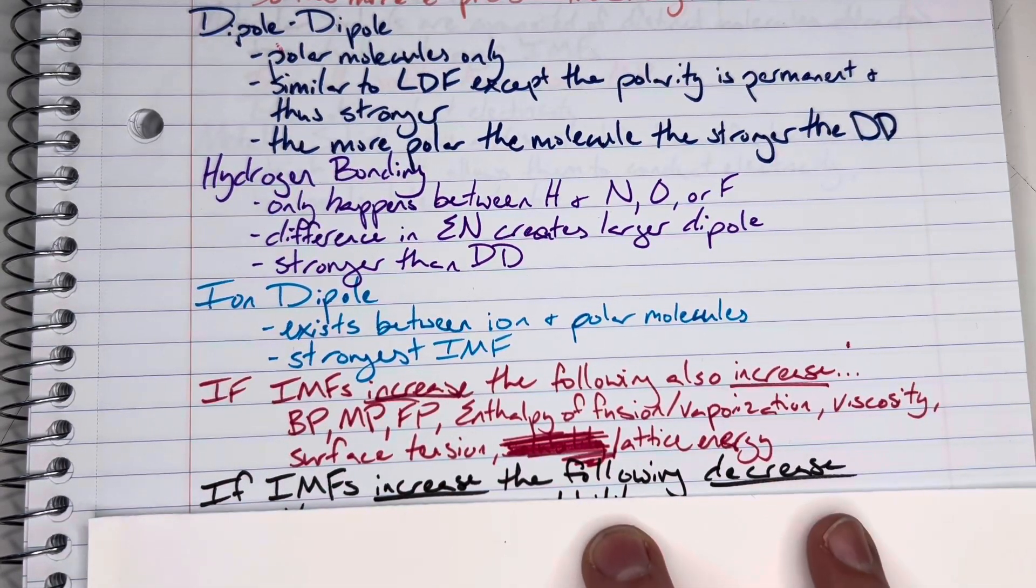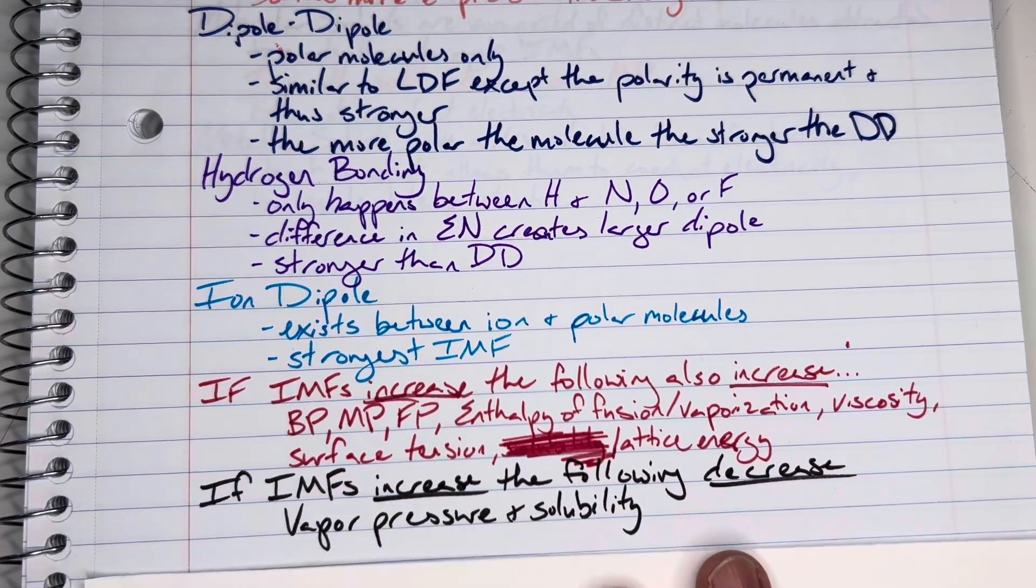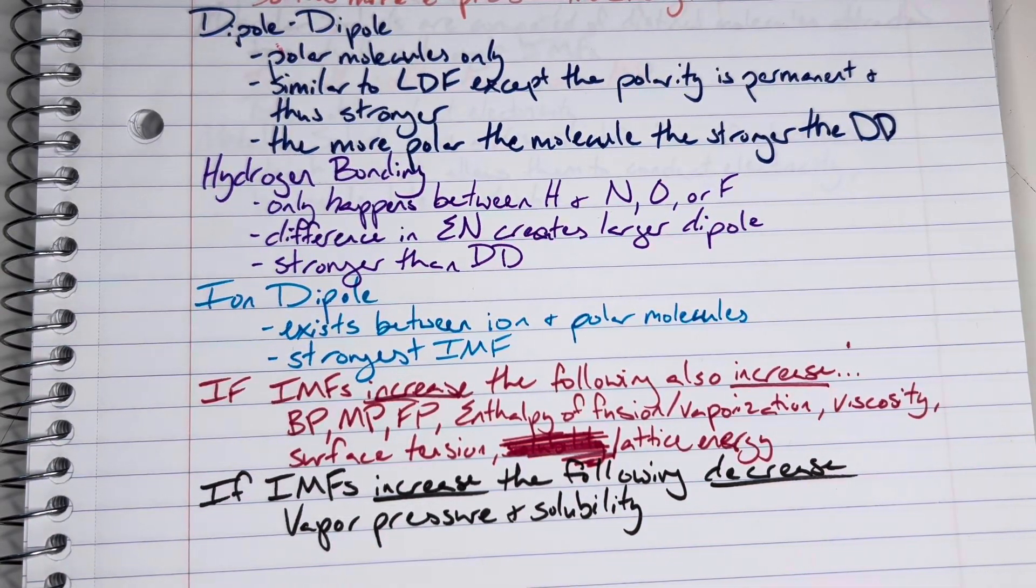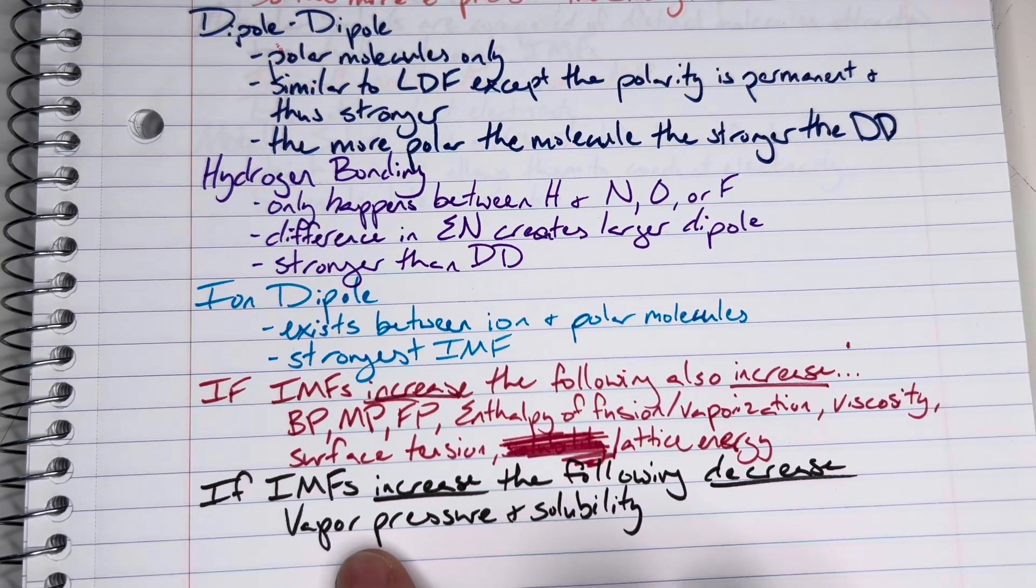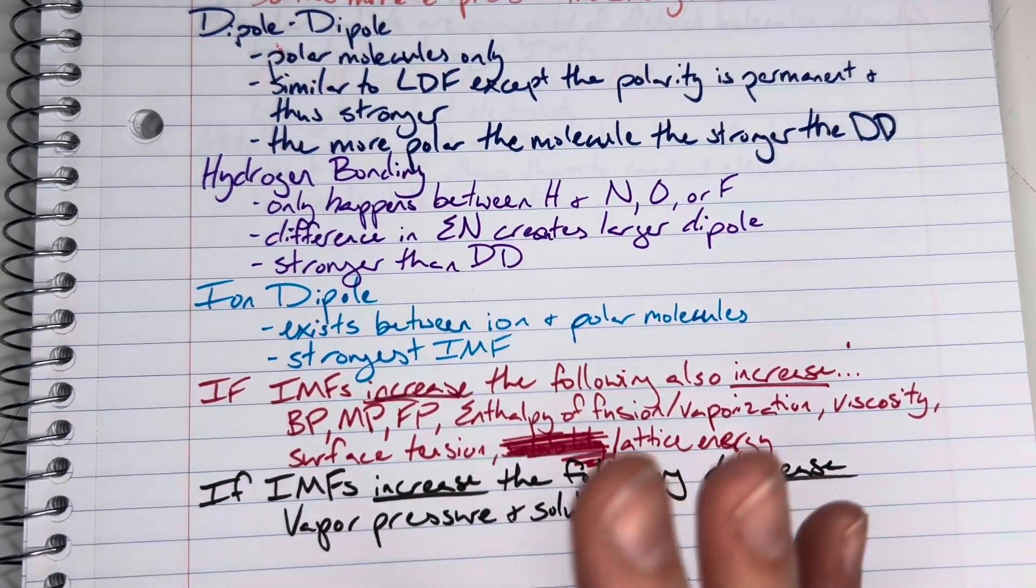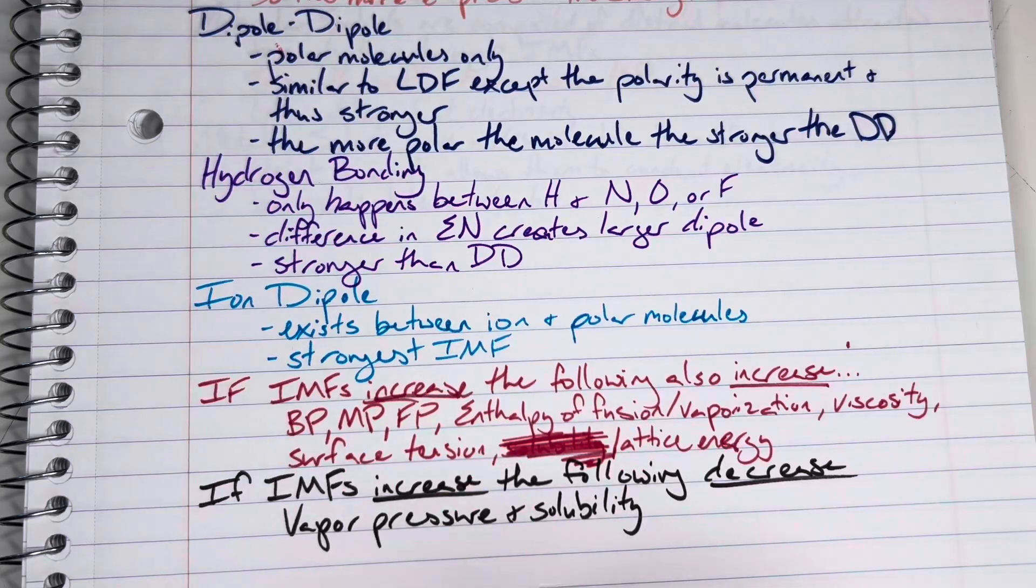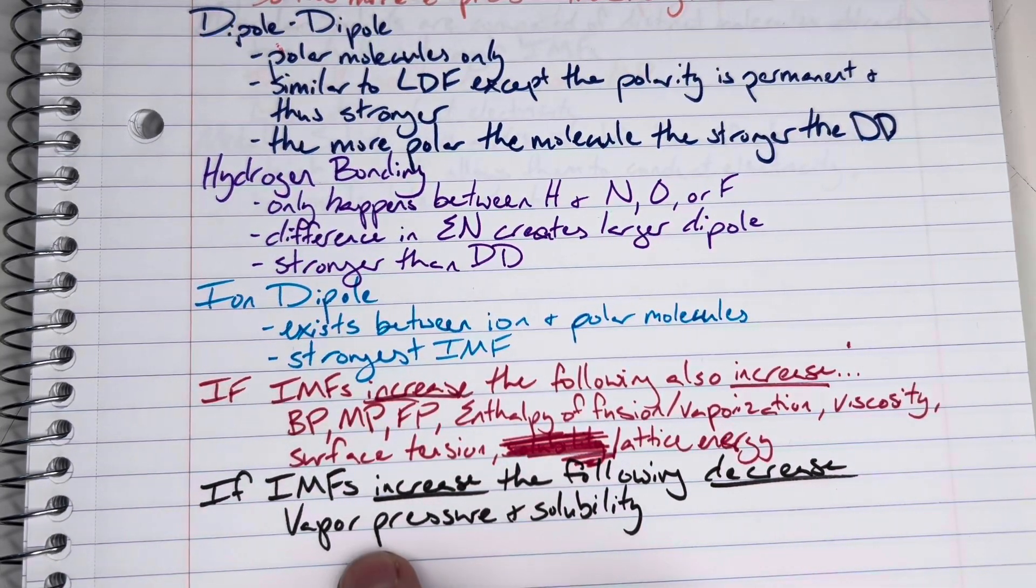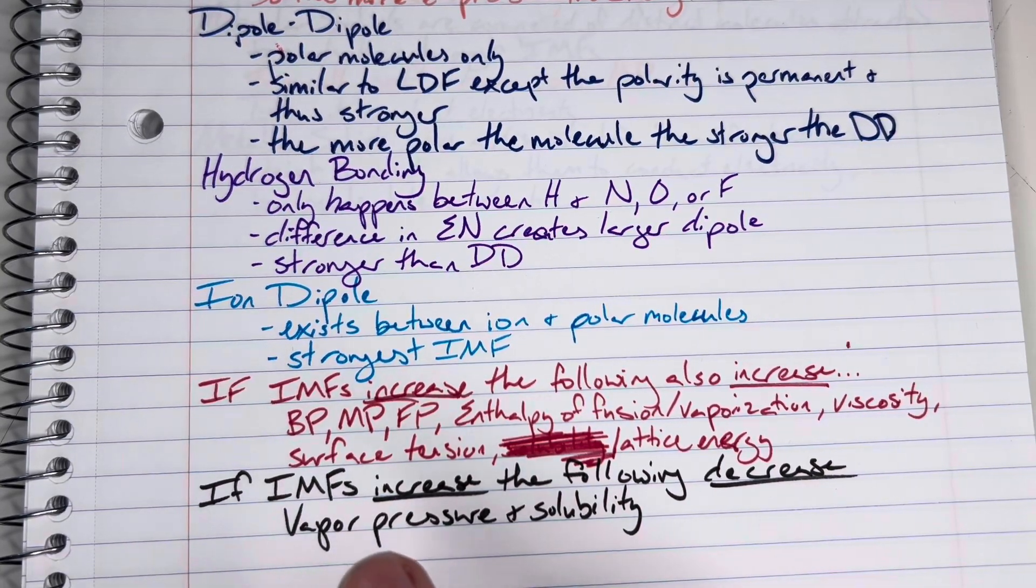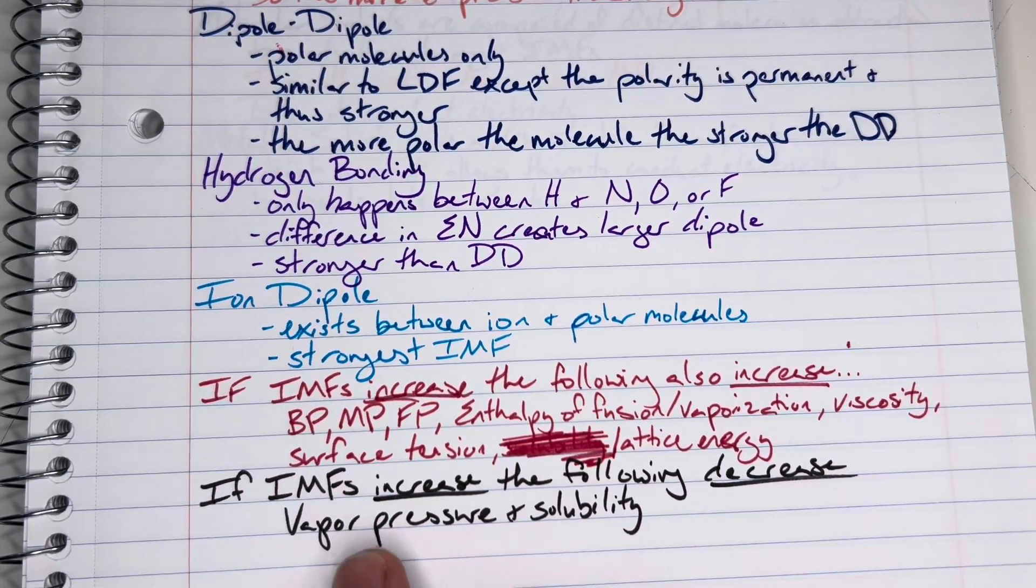And then if intermolecular forces increase, the following are going to decrease: vapor pressure and solubility. Again, if I have a high intermolecular force, that means I'm very attached to my neighbor. Vapor pressure is the amount of gas that's going to escape off of a liquid, and so I will have a lower vapor pressure if I am more attached to my neighbor, and I am less likely to turn into a gas.